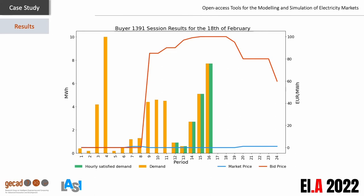Next are the session results achieved by a randomly selected buyer for the same day. As it is possible to see, this buyer only submitted bids for the first 16 hourly periods. Unfortunately for this player, his demand was only satisfied from period 12 until 16. This means this player submitted lower prices in the first periods of the day than the last seller to sell, thus not being able to trade. This chart also proves that there was trading from periods 12 to 16 at least, but the maximum amount of traded energy was near 8 MWh in period 16.